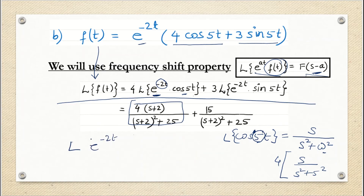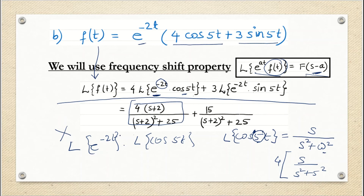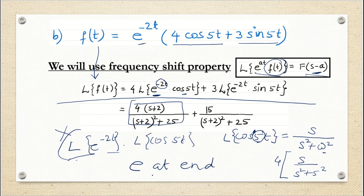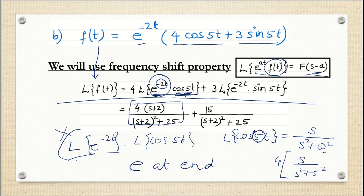An important note: do not separately multiply the Laplace transforms of e^(−2t) and cos5t — that is wrong. The correct approach is to think 'e at end': keep the exponential function aside, first perform the Laplace transform of the remaining function, and then in the last step shift every s by a, because e at end.